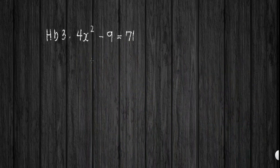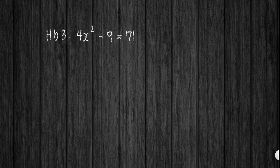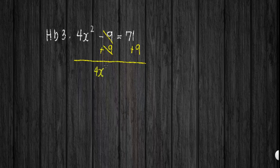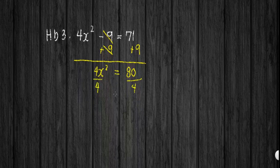For our third example, we have 4x squared minus 9 equals 71. First, I have to eliminate the negative 9, so I will add both sides by 9. After cancelling, we have 4x squared equals 71 plus 9, which is 80. To simplify further and isolate x, we need to remove the 4 by dividing both sides by 4, giving us x squared equals 80 divided by 4, that is 20.